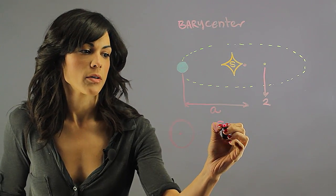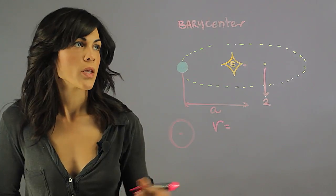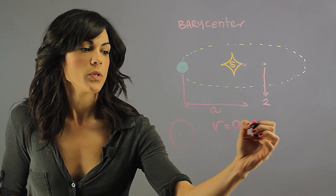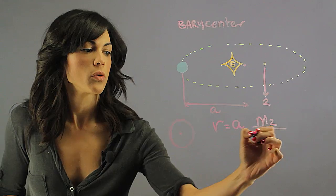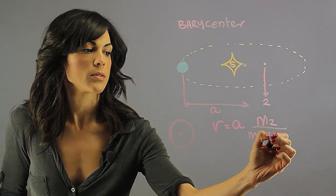So the barycenter, this distance we'll call it R, is the distance between the objects times mass 2, divided by mass 1 plus mass 2.